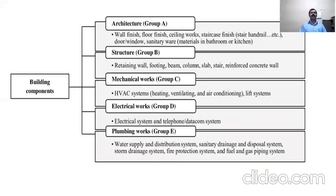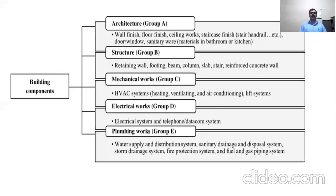Building components are different parts. Part A consists of finished floor, finished ceiling work, staircase, etc. The structural part is another group. A third group includes heating, ventilation, air conditioning, and lift systems. Group D is electrical work — telephones, data cables, electric supply, etc. And there is also plumbing and disposal systems.